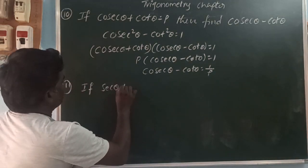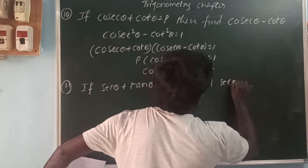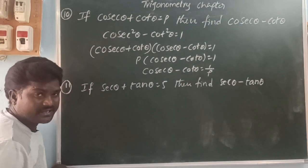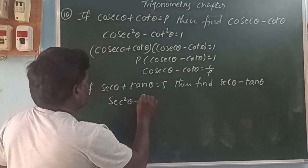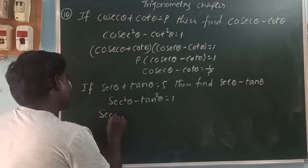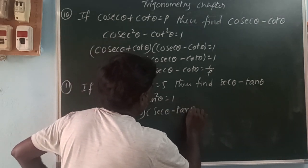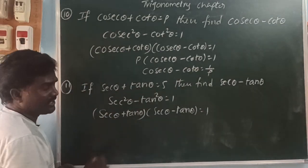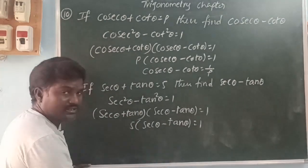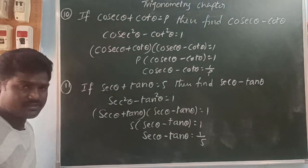Next: if sec θ plus cot θ equals 5, find sec θ minus cot θ. Using the trigonometric identity, sec squared θ minus cot squared θ equals 1. It is in the form of a squared minus b squared. So sec θ plus cot θ into sec θ minus cot θ equals 1. Since the given value of sec θ plus cot θ is 5, then 5 into (sec θ minus cot θ) equals 1, so sec θ minus cot θ equals 1 by 5.